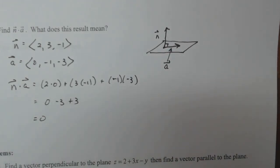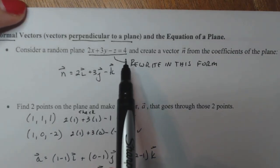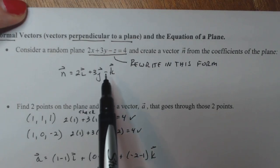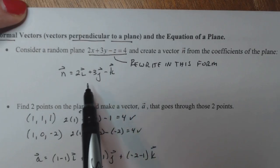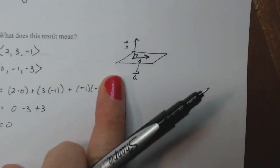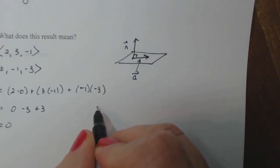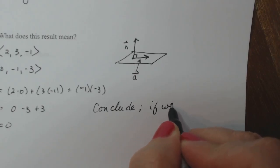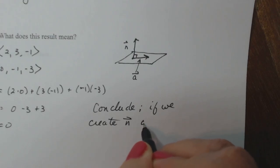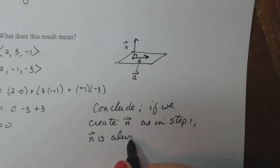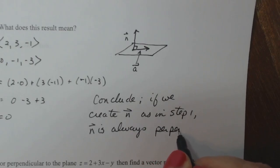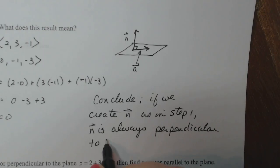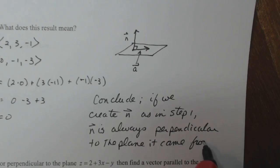So what can we conclude from that? I got n from simply rewriting the plane this way and peeling off the coefficients of the x, y, and z, and I created this vector n. Well, it turns out that this vector n is related to the plane in a certain way. Which way is that? It's perpendicular to the plane. So the conclusion we have to make: if we create n, the vector n as in step one, n is always perpendicular to the plane it came from. Very crucial result.